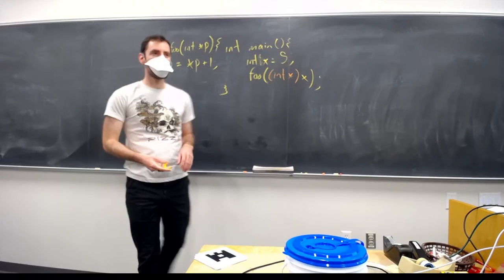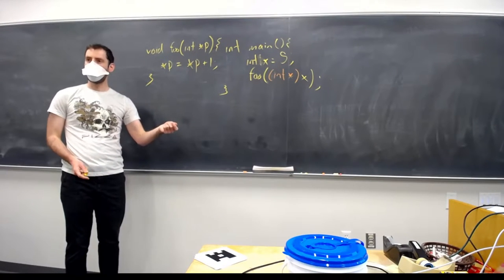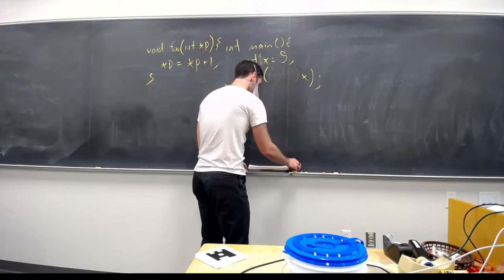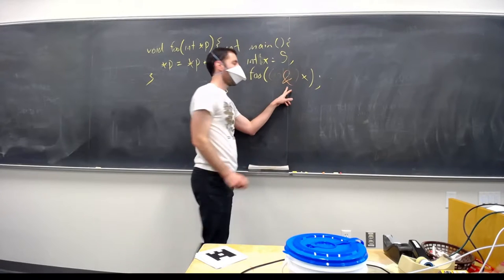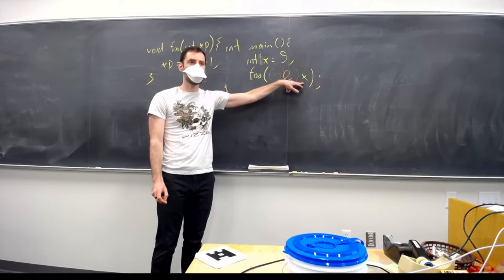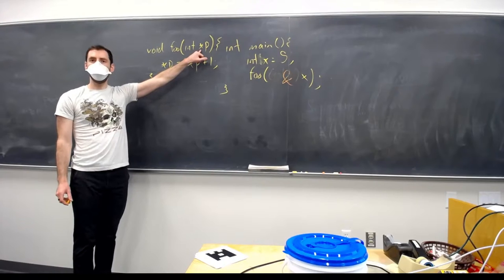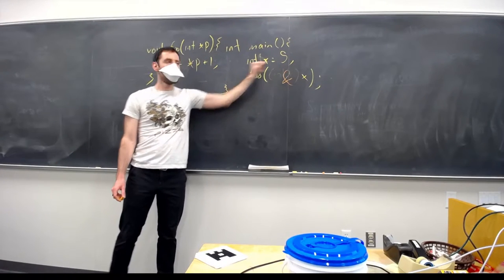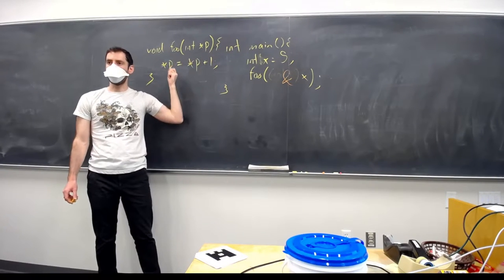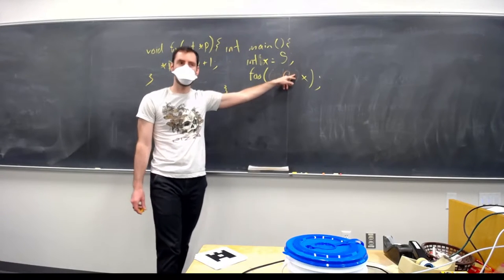So we have a here. The ampersand operator is the address of operator. So if we had ampersand here, that will generate a pointer to wherever the value of x resides in memory. So then here, p would be the address where 5 is stored. And this statement would access that address, retrieve 5 from it, add 1 to 5, and then write 6, so x would be changed here. What are your questions on that?